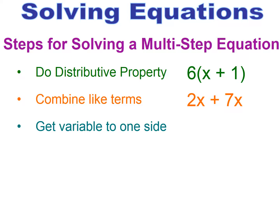If you see variables on opposite sides of the equal sign, you will need to move them together. Whenever you do a movement in an equation, you have to do the opposite to move from one side of the equal sign to the other — that's very important to remember. Once you've done the first three steps, you've gotten your equation to either a one or a two-step equation.